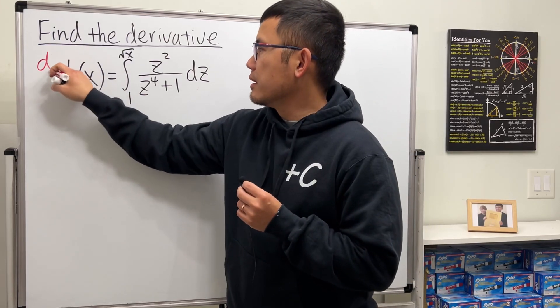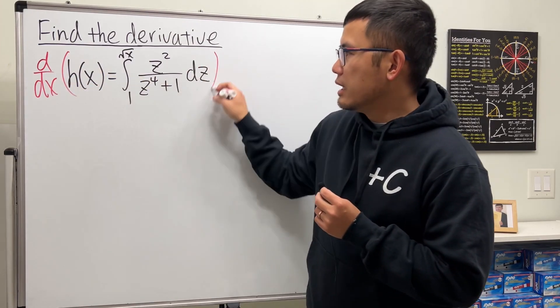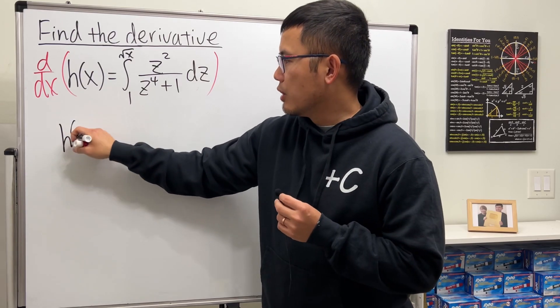So let's go ahead and do the same thing, d dx. On the left-hand side, we just get h of x.